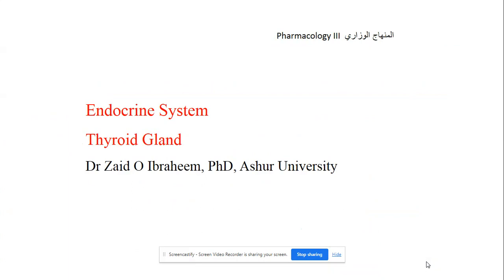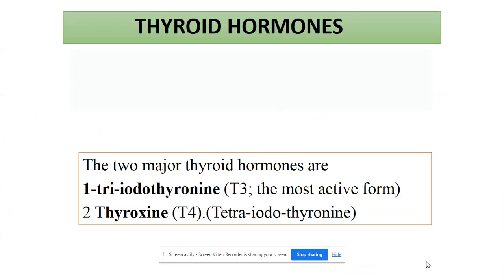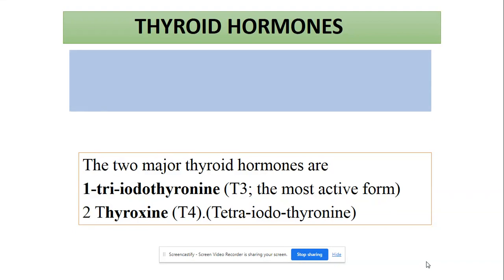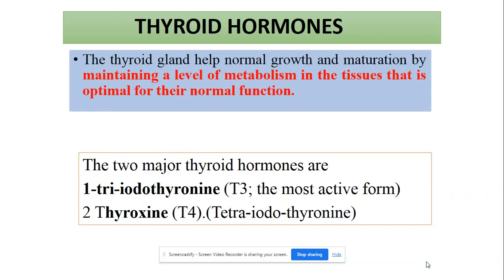Neuroendocrine system — thyroid gland. The thyroid gland is responsible for the maintenance of normal metabolism in the tissues and for optimal normal function. The thyroid gland produces hormones called triiodothyronine, T3, and thyroxine, T4, also known as tetraiodothyronine. These hormones are involved in metabolism and help maintain the normal basal metabolic rate.